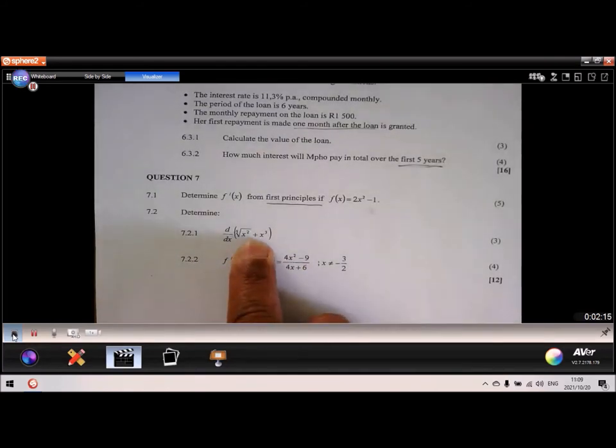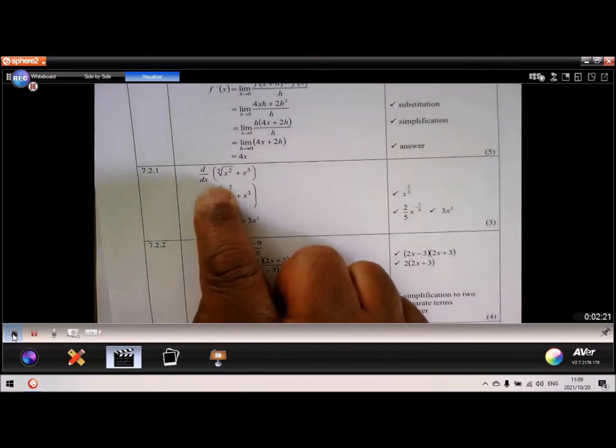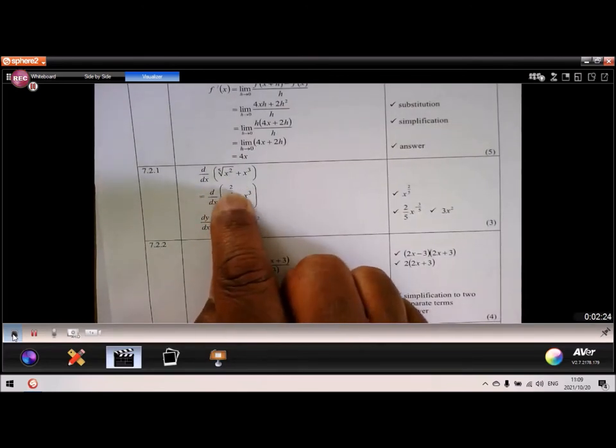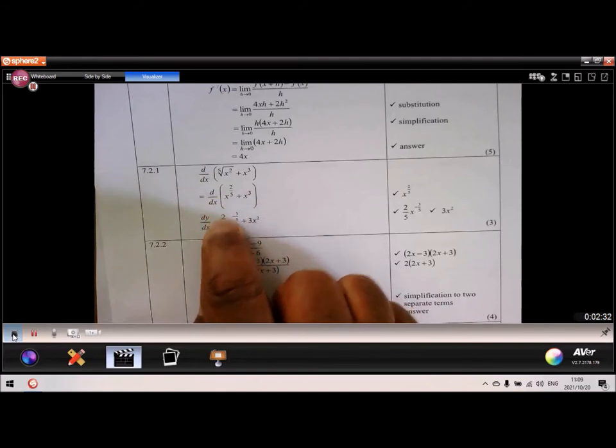So let's do the first one. The only problem here is I must get rid of the surd. So if I do that, the fifth root of x squared is x to the power of 2 fifths. Take note the way we write it down as well.